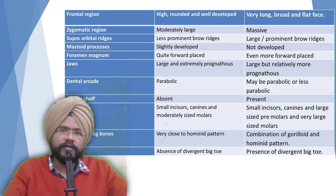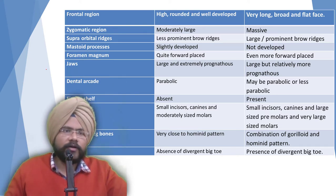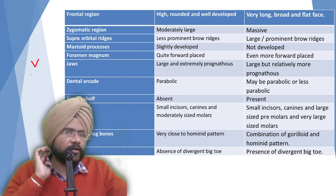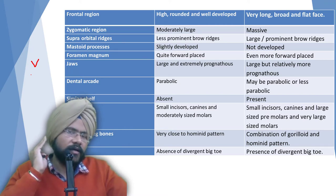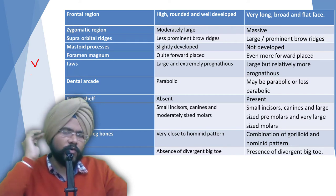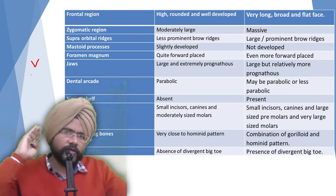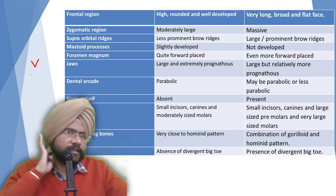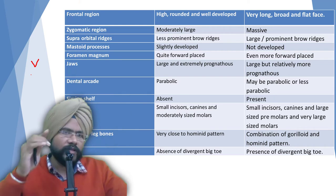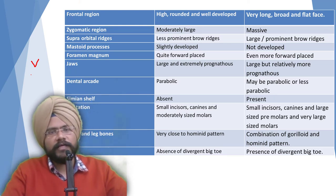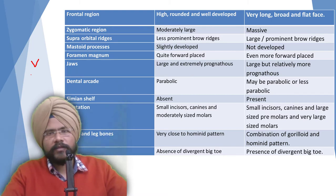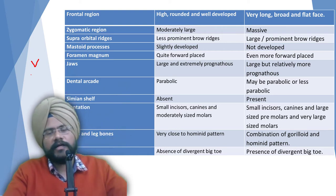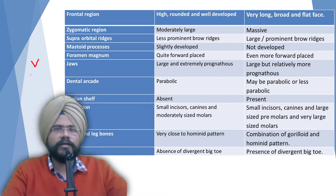The mastoid processes — an inverted pyramid-shaped anatomical structure behind the ear canal — are slightly developed in the gracile form, but in the robust form they are present but not properly developed.